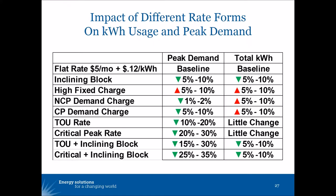We also looked at a critical peak rate, a time of use plus inclining block rate, and a critical peak plus inclining block rate. The inclining block rate design produced both a peak demand benefit and a total energy benefit. The high fixed charge resulted in additional peak demand usage and additional total kilowatt-hour usage. The demand charge rates had a relatively modest effect on peak demand but resulted in increased energy usage.